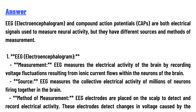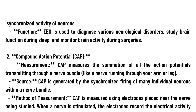Method of measurement: EEG electrodes are placed on the scalp to detect and record electrical activity. These electrodes detect changes in voltage caused by the synchronized activity of neurons. Function: EEG is used to diagnose various neurological disorders, study brain function during sleep, and monitor brain activity during surgeries.